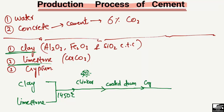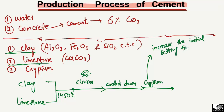Why do we add gypsum in the production of cement? The main role of gypsum is that it increases the initial setting time of the cement. Because we need some time for the cement to have workability, without gypsum the setting time is very low. We add gypsum to increase the initial setting time and also to slow down the hydration process of the cement. These are the two main reasons why gypsum is added.